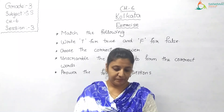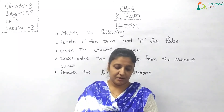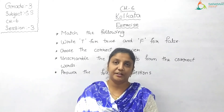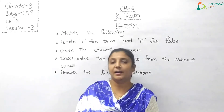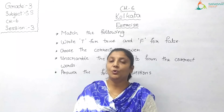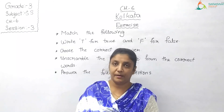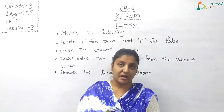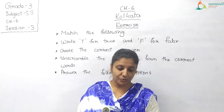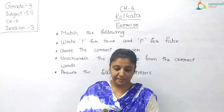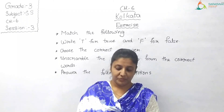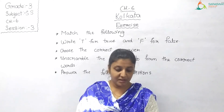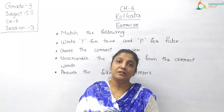D: The main diet of Bengalis consists of dash and dash. Options: 1. Rice and fish, 2. Wheat and fish, 3. Rice and chicken, 4. Wheat and chicken. The correct answer is number 1: rice and fish.